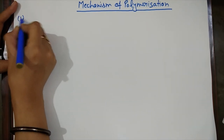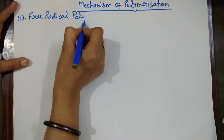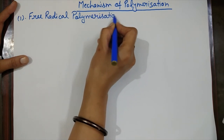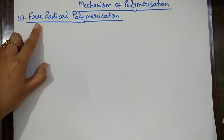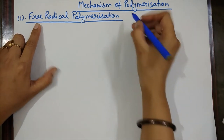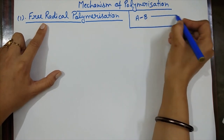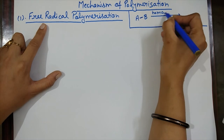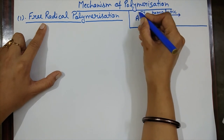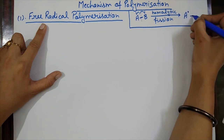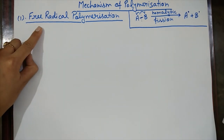The first type of mechanism is free radical polymerization. First we need to know what is a free radical. Free radicals are formed by homolytic bond fission. For example, if we have a molecule A–B with a single bond and we do homolytic fission, the bond breaks so that one electron goes to A and one to B — making A a free radical and B a free radical.